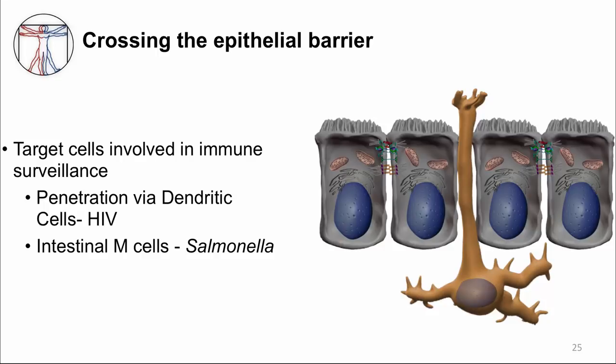Some microbes are able to cross intact epithelial barriers to establish an invasive infection. One mechanism is to invade specialized cells of the immune system whose job is to transiently open the epithelial junctions to survey and sample the mucosa. Here you can see a dendritic cell — it's the brown colored cell — which is one of these specialized cells. The dendritic cell can sample the mucosa by extending thin cellular processes between the intercellular junctions of the epithelium. HIV, for example, can't invade epithelial cells directly because they lack the right receptor. But HIV invades dendritic cells in order to be brought across the epithelium. From here, HIV can spread to other cells. This is thought to be how HIV first crosses some mucosal epithelial barriers without the need for a wound.